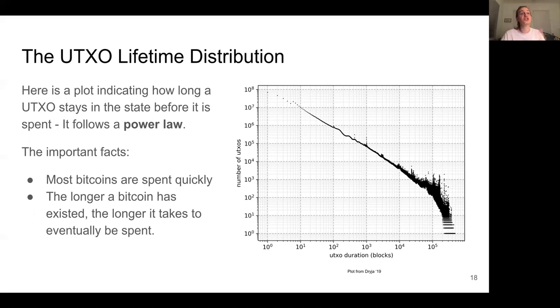This suggests that the UTXO duration distribution follows a power law, which will be helpful later when we analyze the theoretical performance of the accumulators that we're interested in.